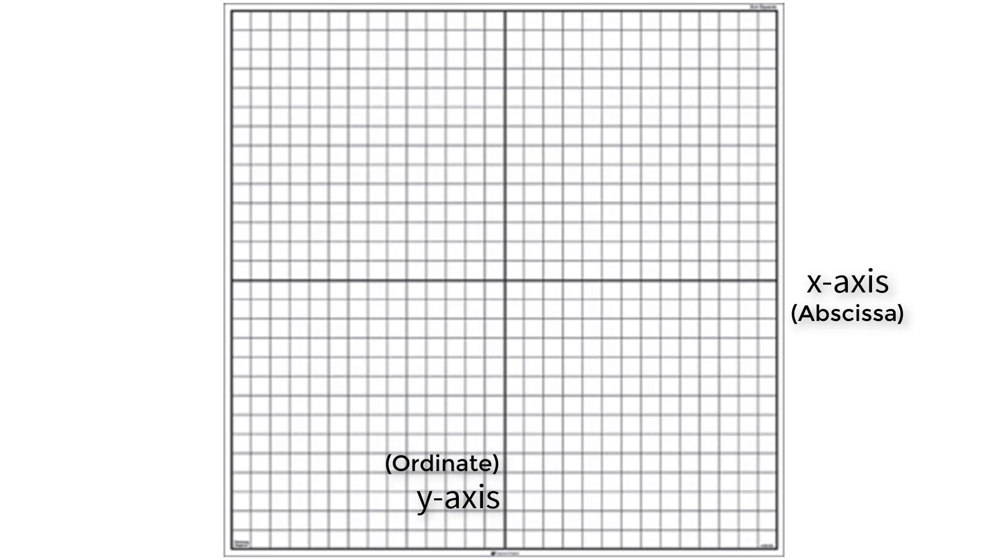If you want to graph a point on the plane, you are going to have to use ordered pairs. An ordered pair is a pair of values that are separated into x-axis and y-axis.